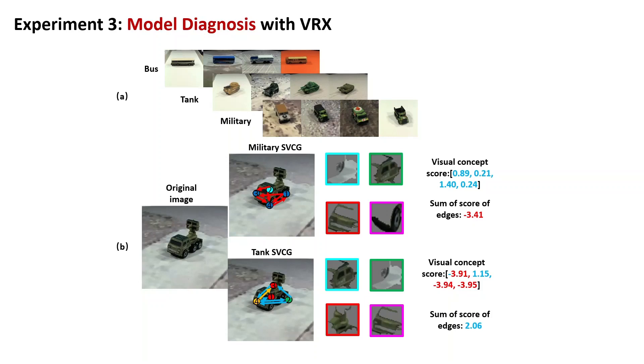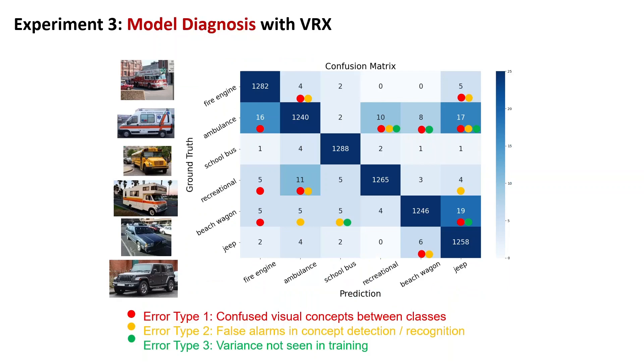VRX uses explanation to diagnose the model and find that bad concept structure leads to the incorrect prediction, then provides useful suggestions which improve the original model's prediction. This experiment shows VRX diagnoses the network model and categorizes 3 main types of errors. Based on explanation, 95% of errors have been correctly explained and automatically corrected by VRX.